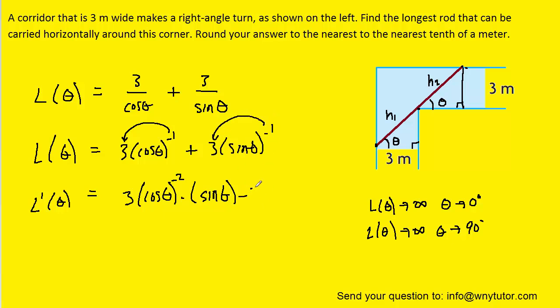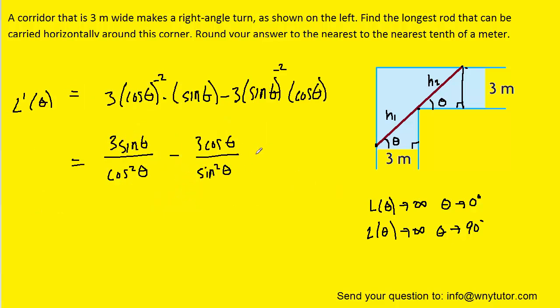We then apply the chain rule one more time to get minus 3 times the inside function, subtract 1 from the exponent, and multiply by the derivative of the inside function, which would be cosine of theta. Now it's going to be convenient to move the cosine theta to the negative 2 down to the denominator, as well as the sine of theta to the negative 2, so that we can make those exponents positive.